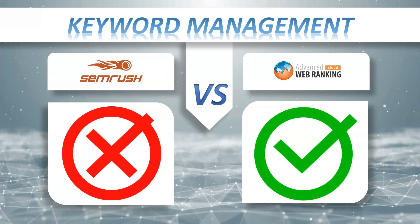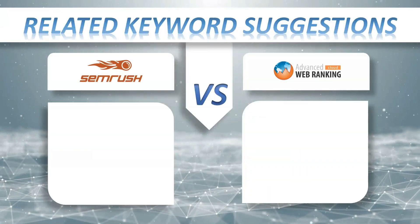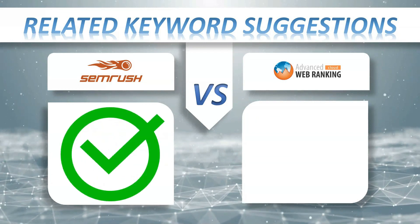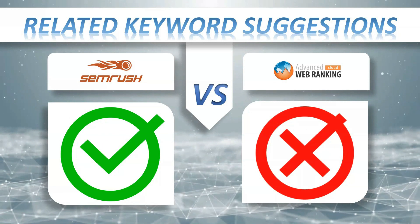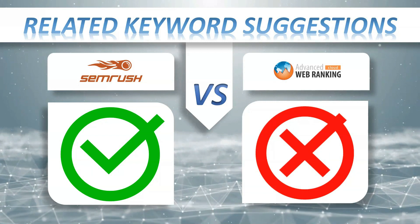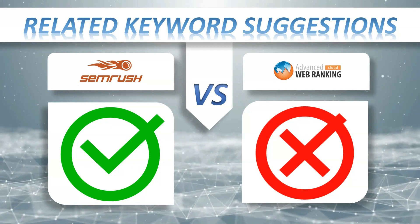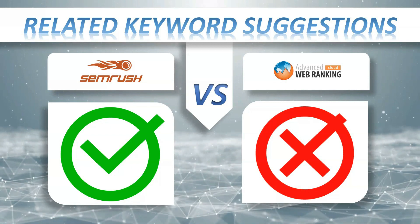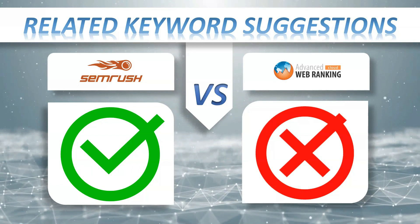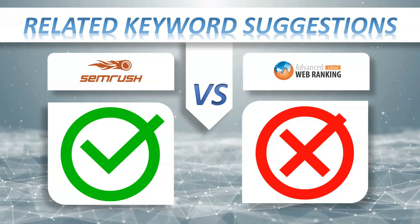Related keyword suggestions: SEMrush plus, AWR Cloud minus. The easiest way to attract clients is to find out what your potential customers are searching for in Google and create content around those topics. Imagine how your business would benefit if you could analyze search trends, find terms related to your domain, and customize content to serve the actual needs of your customers.